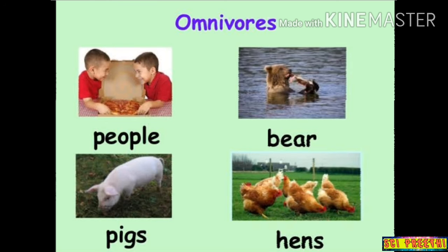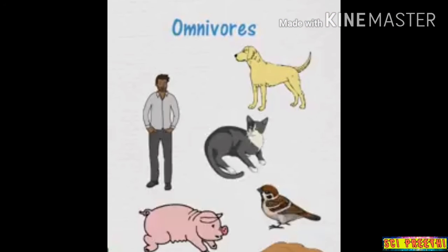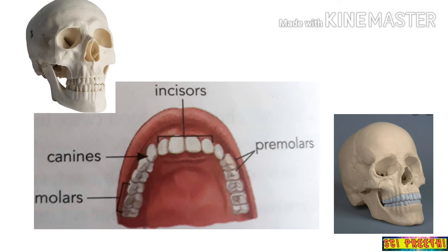Examples of omnivorous animals are bears, pigs, hens, squirrels, dogs, monkeys, rats, and sparrows. Regarding the dentition of omnivorous animals, it is adapted for eating both plants and the flesh of other animals. Human beings have blade-like incisors to bite, sharp canines to tear, and flatter, broader molars and premolars to chew food.